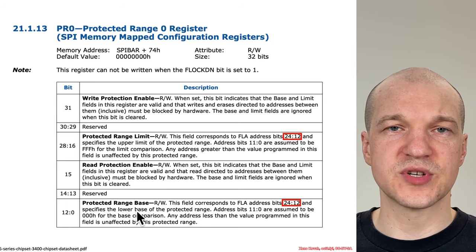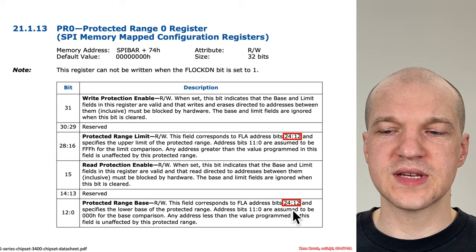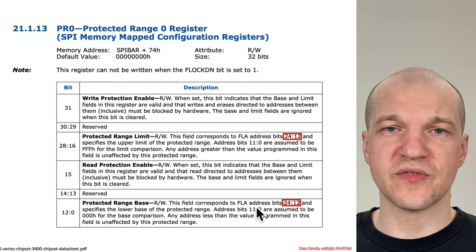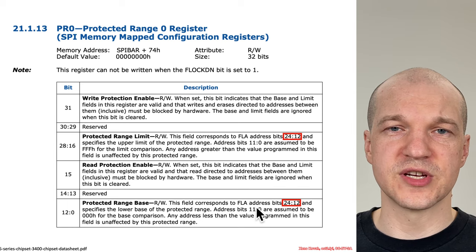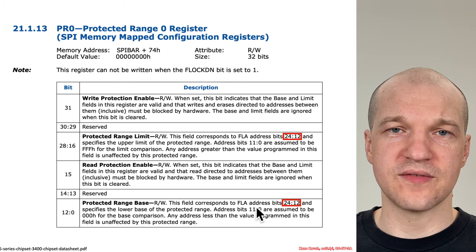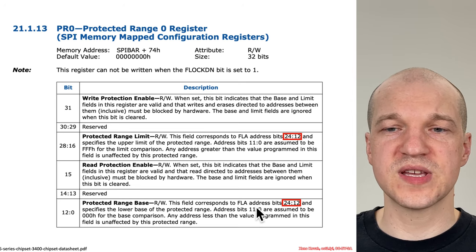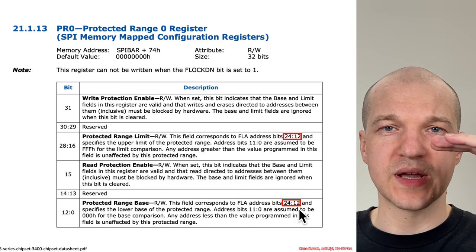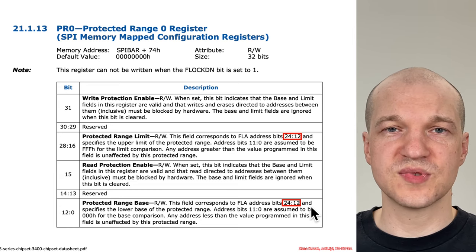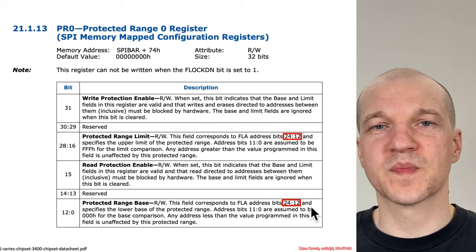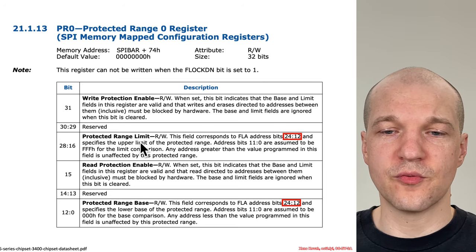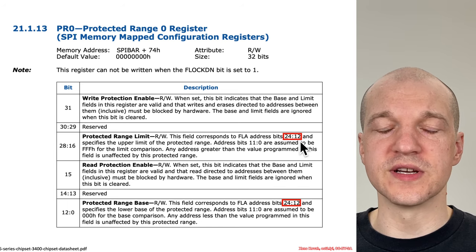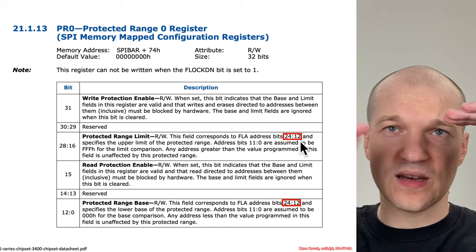How do we specify this protected range base and limit? These 13 bits are used as the most significant 13 bits of a flash linear address where the protection should start. Flash is nominally using 24-bit addressing, but you could have two things concatenated, giving 25 bits. These upper 13 bits specify some place in the flash linear address range to start the write protection. The least significant 12 bits are assumed to be 0, so you have to start the protection on a hex 1000-aligned address. For the protected range limit, it's again the upper 13 bits of a 25-bit address, and the least significant 12 bits are assumed to be 1.